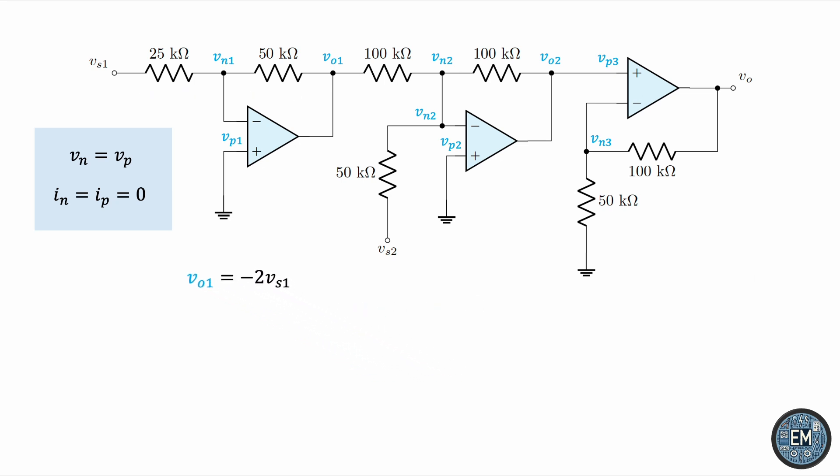So we've completed the analysis of the first stage of this amplifier circuit. Moving on, notice that VP2 is 0 as well, because the non-inverting input of the second amplifier is also grounded. Again, this must be VN2, and we can write a KCL equation all the same.